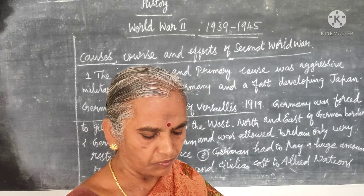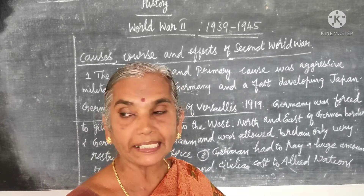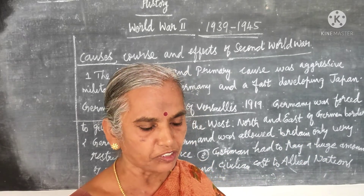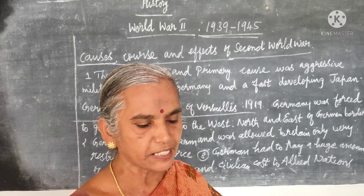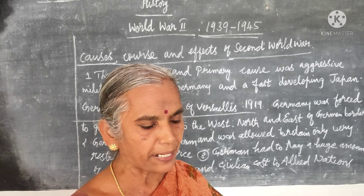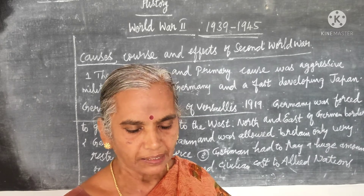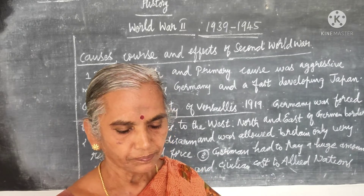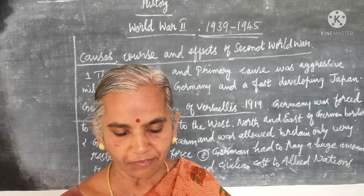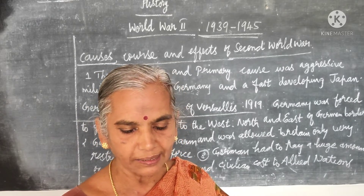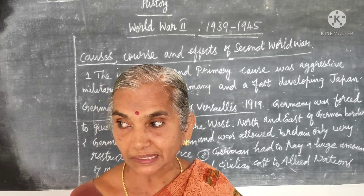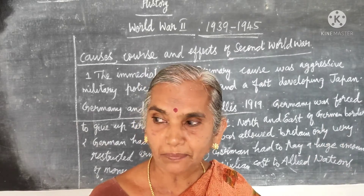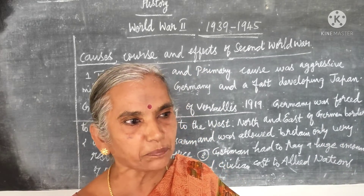Britain and France declared war on Germany. In the First World War it was central powers versus allied powers; this time it was Allied powers versus Axis powers. Germany, Italy, and Japan formed the Axis. Britain and France declared war on Germany in September 1939. In June 1940, Italy joined Germany, and in September 1940, Japan also joined.